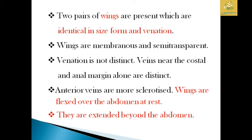The wings are membranous as well as semi-transparent. The venation is not clearly distinct according to scientists. The veins — the costal as well as the anal margin alone — are distinct in these insects. The anterior veins are more sclerotized and the wings are flexed over the abdomen at rest.